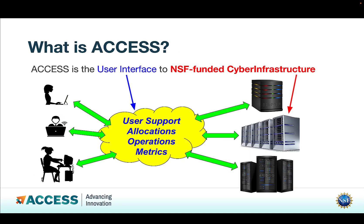We can visualize this. We've got users on the left, high-performance computing resources on the right, and in the middle is ACCESS. It's the connection by which users can access those resources.